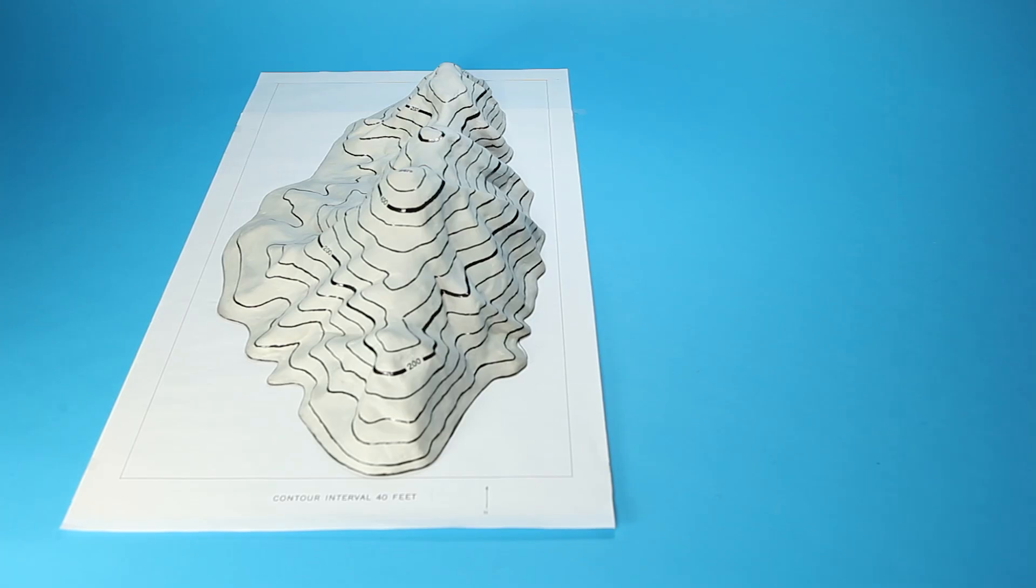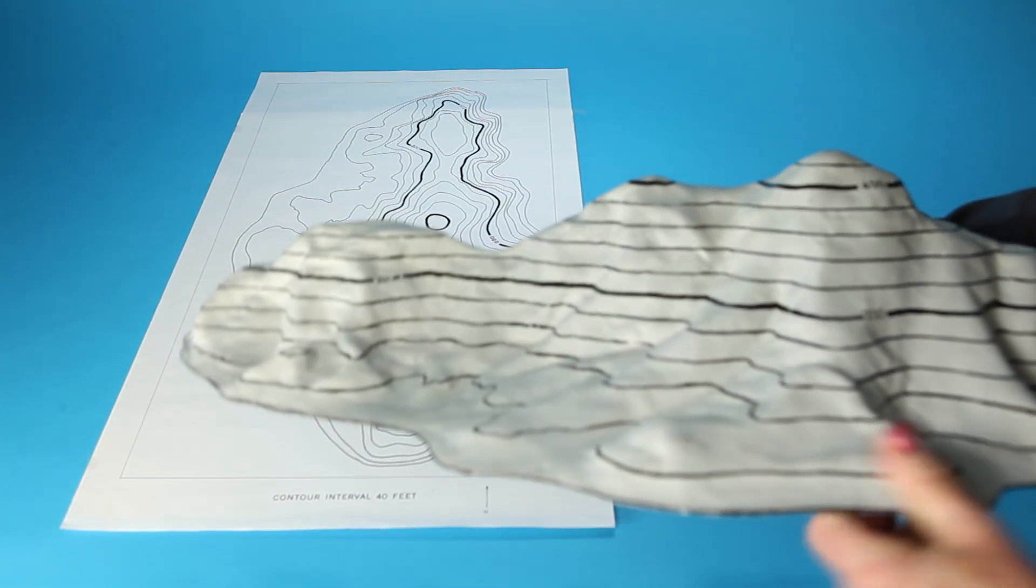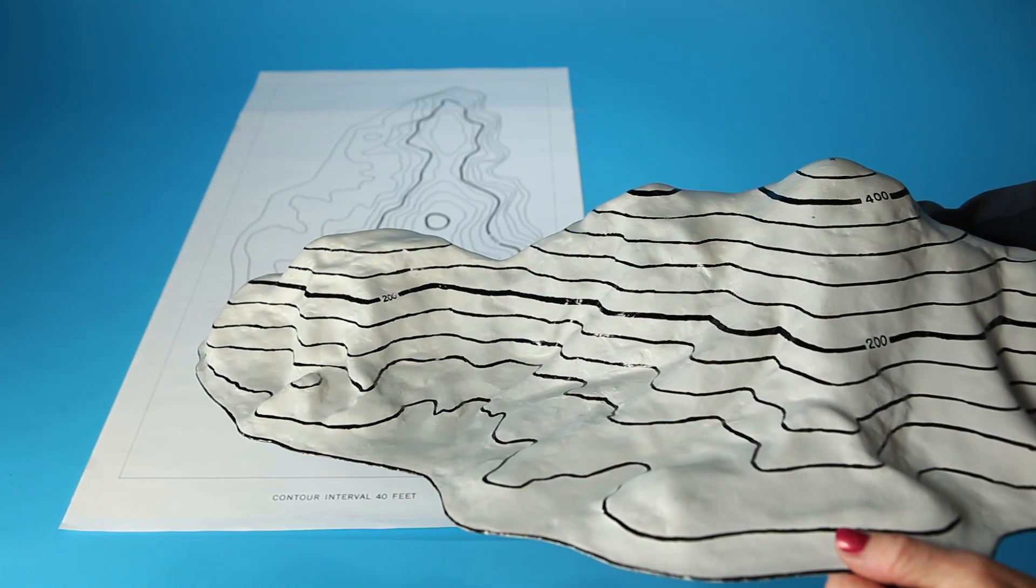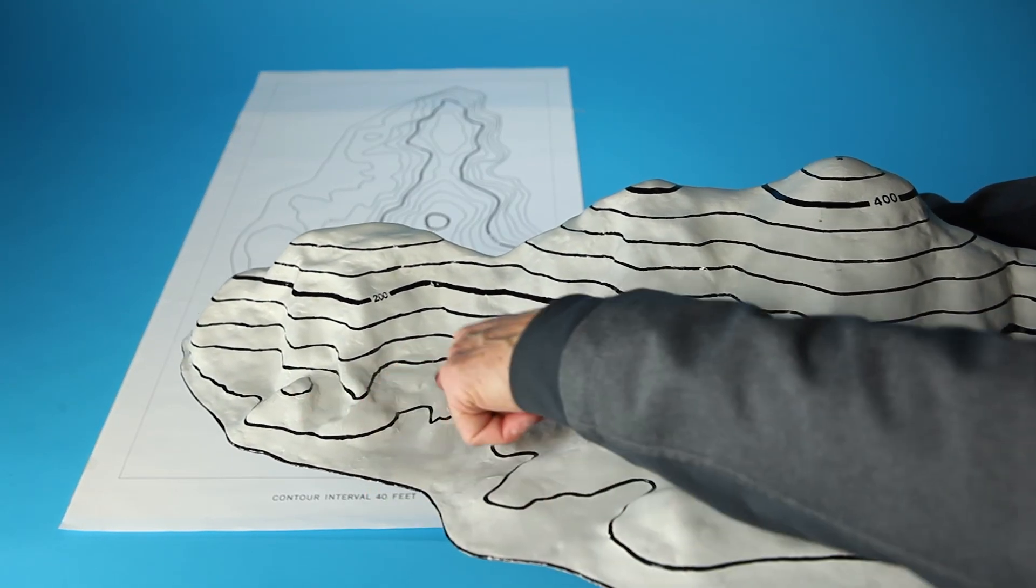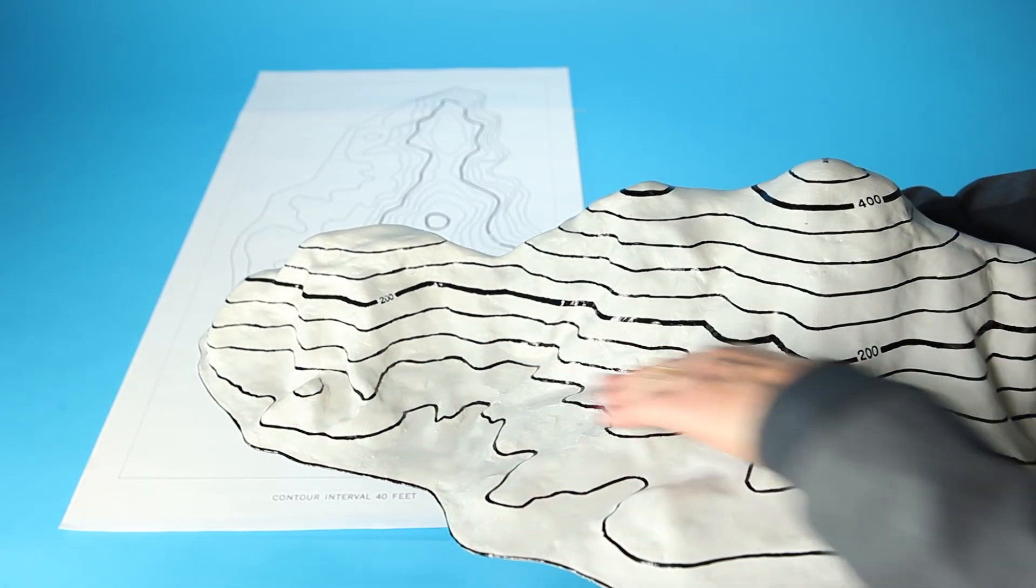We drew contour lines onto this model. A contour line is level. It stays at the same elevation. It's curving around the shape of the land, but it's staying at the same height.